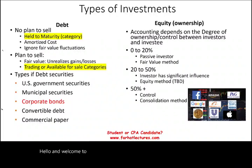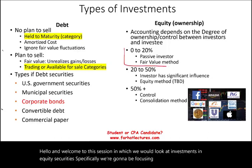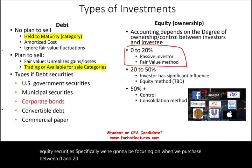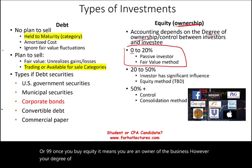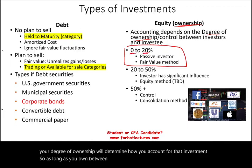Hello and welcome to the session in which we look at investments and equity securities. Specifically, we're going to be focusing on when we purchase between 0 and 20 percent of another company's stock. Once you buy equity, it means you are an owner of the business. However, your degree of ownership will determine how you account for that investment. As long as you own between 0 and 20 percent, for accounting purposes, you are considered a passive investor.